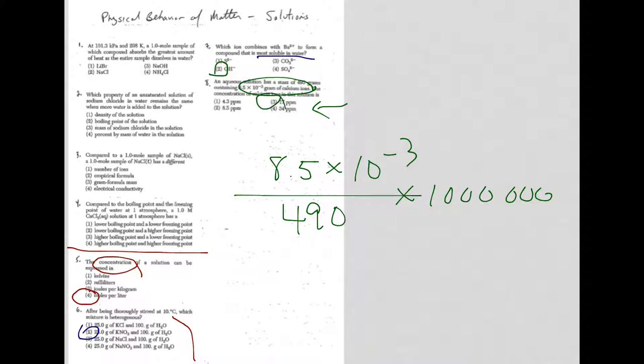Let me show you. 8.5 times 10 to the minus 3 is the same as sliding the decimal over 1, 2, 3 spaces, so it's 0.0085 divided by 490 times a million. Try it, make sure you get choice 3. Keep working hard, good luck.